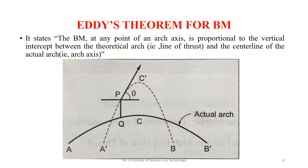Eddy's theorem states that the bending moment at any point P of an arch is proportional to the vertical intercept PQ between the theoretical arch and the center line of the actual arch. The theoretical arch carries the thrust, while the actual arch may be parabolic or circular. The bending moment at point P is proportional to this vertical intercept PQ.